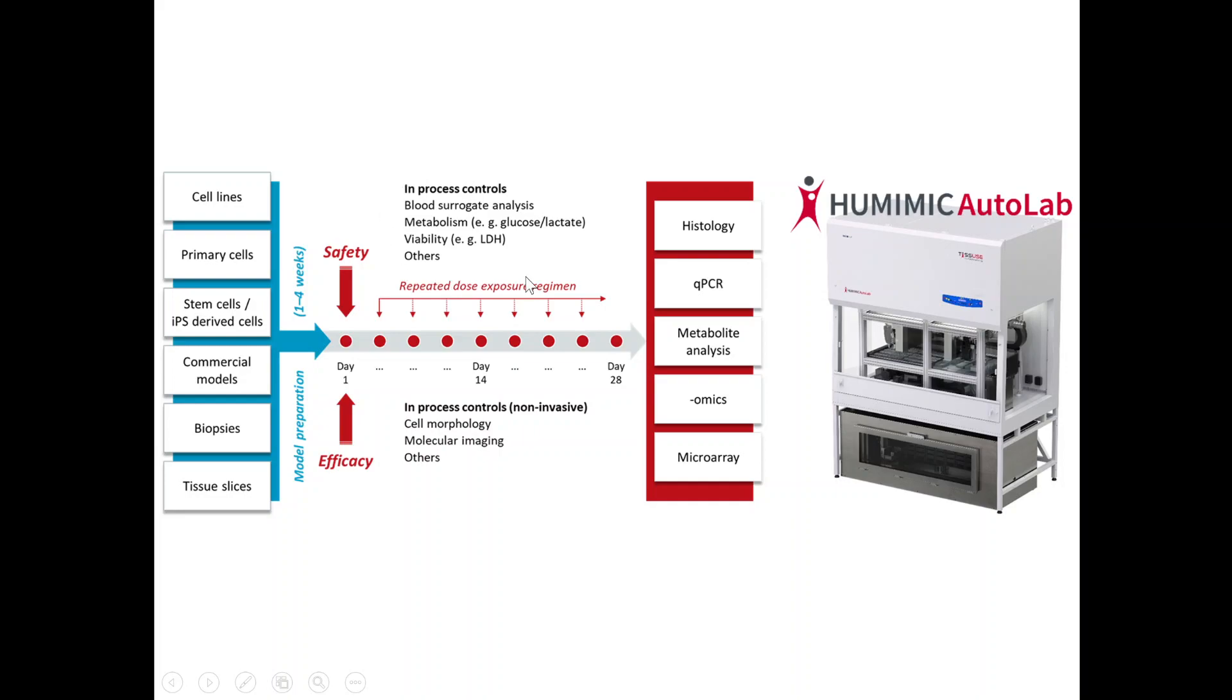In between, we can do in-process controls. For example, we can do daily blood surrogate analysis. We can look at metabolism, for example, glucose or lactate. We can look at viability, for example, LDH and others. And at the same time, we can do non-invasive in-process controls like cell morphology, molecular imaging, because the chip is completely microscopable. At the end of the culture, we can remove the tissue. We can look at histology. We can do qPCR analysis, metabolite analysis. We can look at omics, but we can also do RNA sequencing, for example, for microarrays.